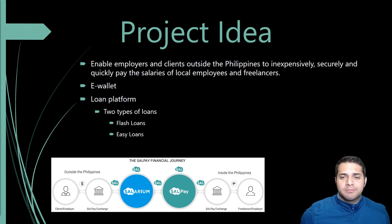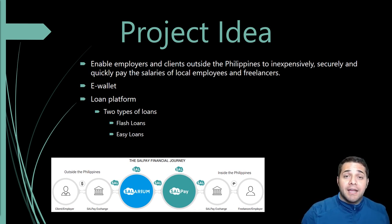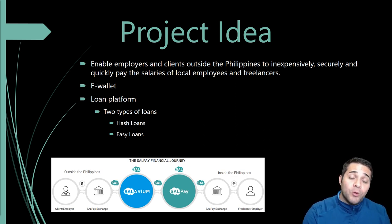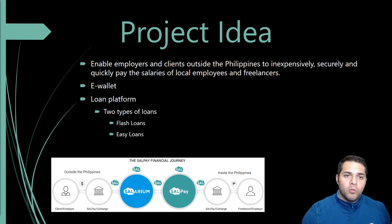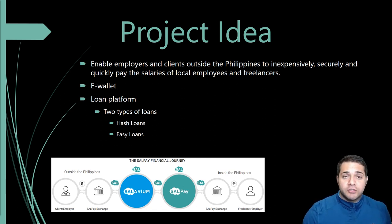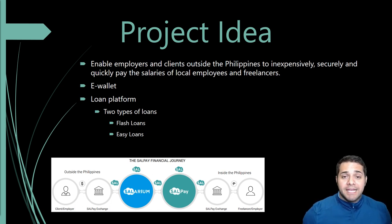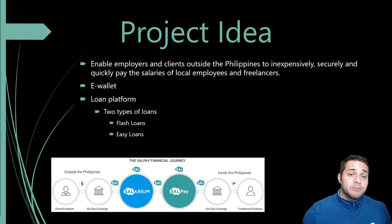Solarium's project idea is to enable employers and clients outside the Philippines to inexpensively, securely, and quickly pay the salaries of local employees and freelancers. They also have an e-wallet — a cash card paired with a mobile app — that lets users make the most of their money and time. It allows users to view their transactions, shop online and overseas, and send money to major banks.